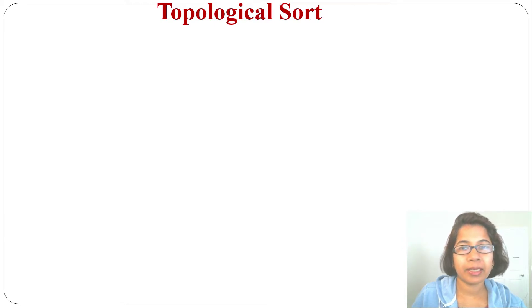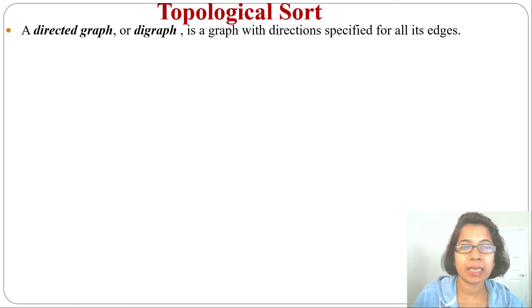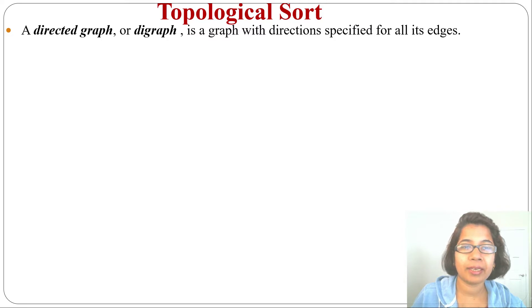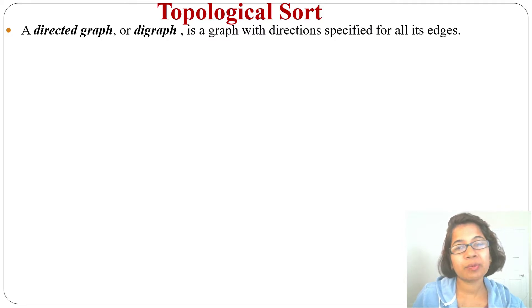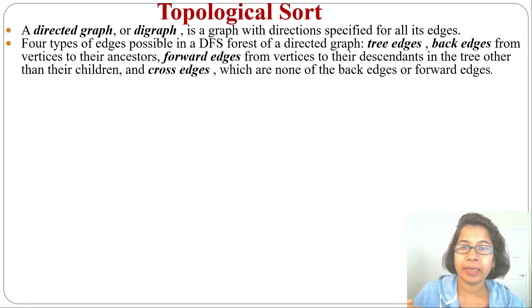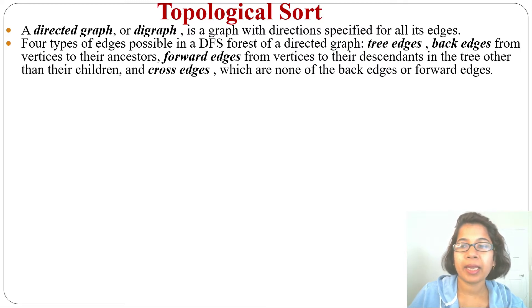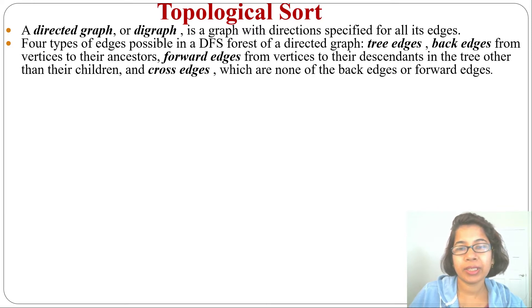The graph should be directed and there should not be any cycle. A graph with direction specified for all its edges is called a directed graph or digraph. So for topological sort, it should be a digraph and there should not be any cycle. If we do a DFS forest of a directed graph, there can be four types of edges possible: tree edges, back edges, forward edges, and cross edges.